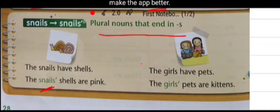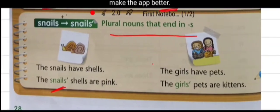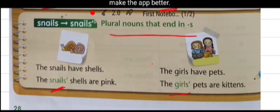Now we can see in second example, the girls' pets are kittens. Here, girls is a plural noun, and we will put apostrophe after S. But we cannot use another S after this.